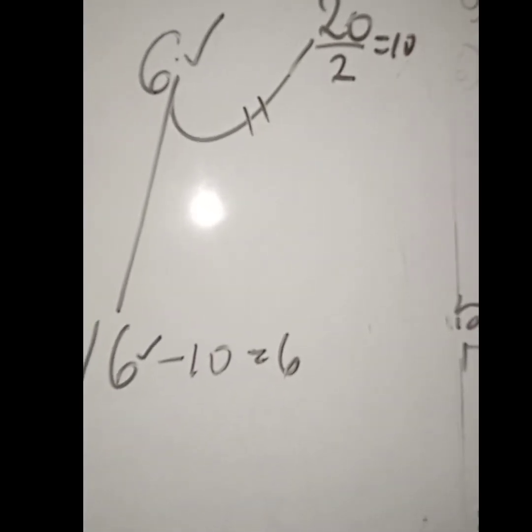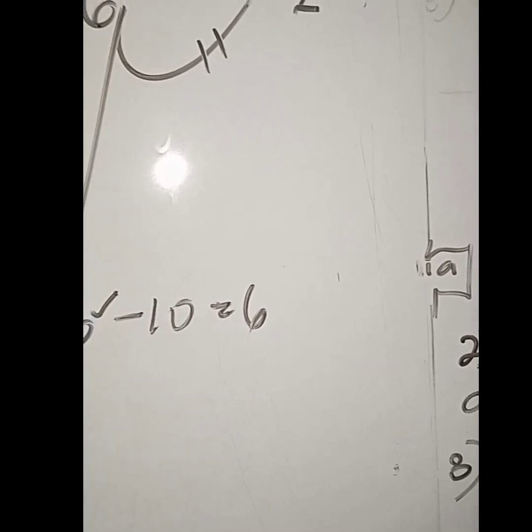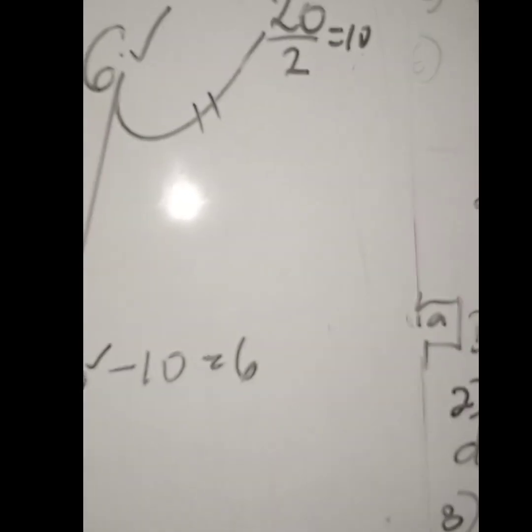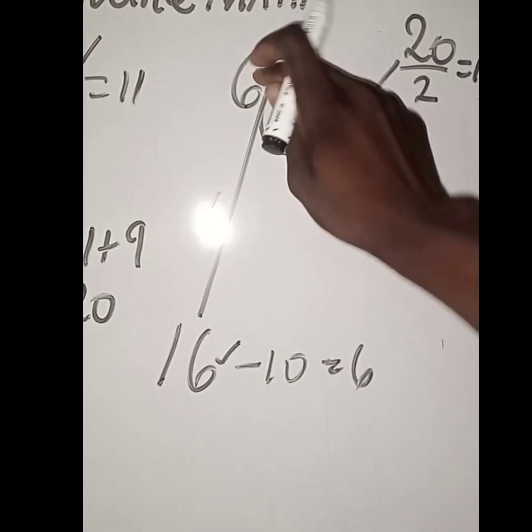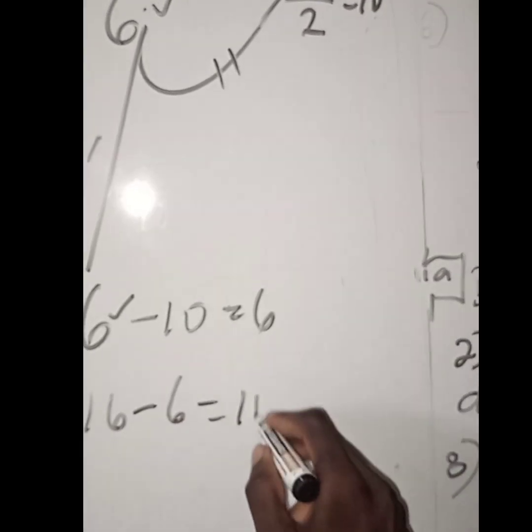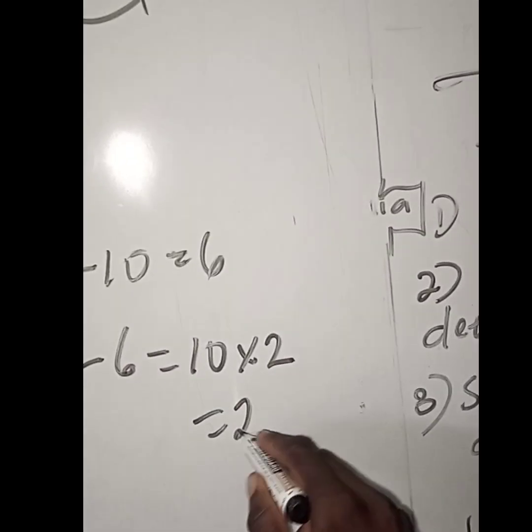If you want to get this 20, what we are going to do is subtract. You do 16 minus 6, which will give you 10. So 10 times 2 will give you 20.